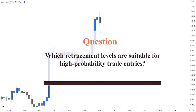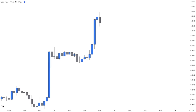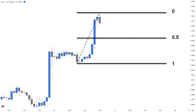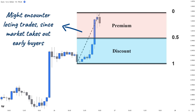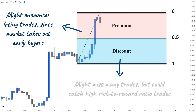The question is, which retracement levels are suitable for high probability trade entries? To answer this, we divide the possible pullback range into two parts. The area above the 50% retracement level is called the premium, and the area below is called the discount zone in the bullish scenario. Trying to buy in the premium area could make you lose many trades, since the market often loves to take out early buyers. Looking to buy in the discounted area might make you miss trades in a strongly trending market, but it could lead to high risk-to-reward ratio trades. Remember, the same concept applies to the bearish scenario.